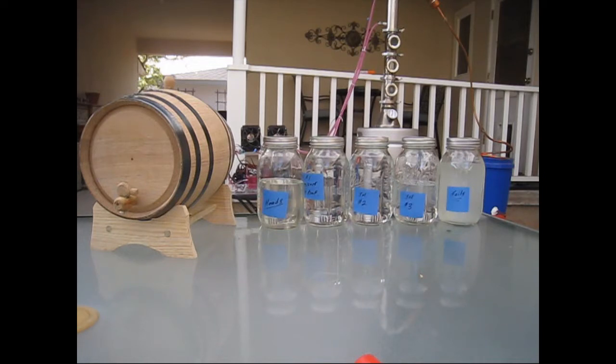First jar on the left is called the heads. That's the part you don't want to drink, the part you want to throw away. Basically, some people say you want to throw away the first 10 milliliters per gallon of product you're doing. I did 10 gallons worth, I got about 500 milliliters there that I'm tossing out.